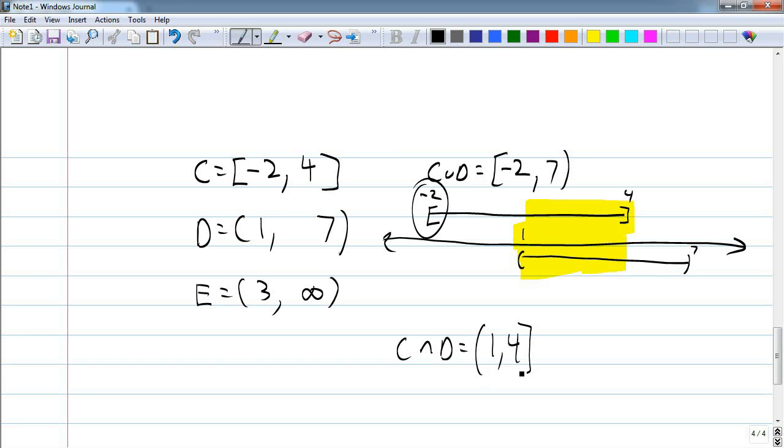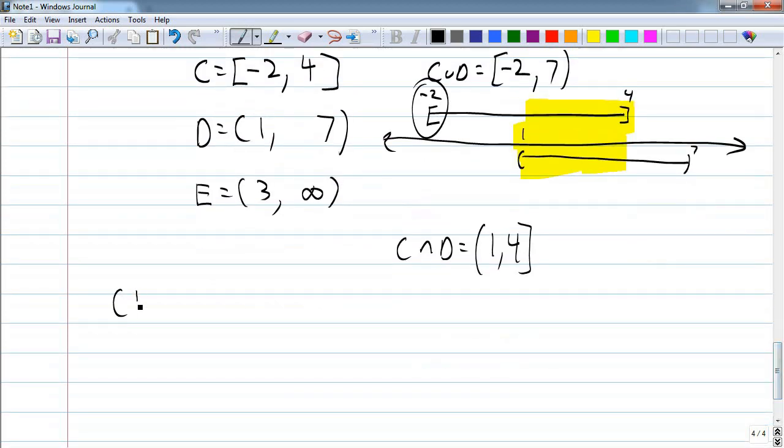Take a stab at D union E and D intersect E. What I want you to do is take a stab at these two things, put them on a half sheet of paper, and hand it to me walking in tomorrow. Do D union E and D intersect E. If you aren't sure, do your best.